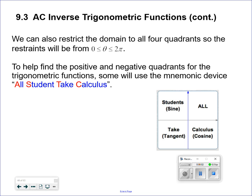Welcome back again. We're going to expand on what we did on 9.3 AC. We're changing our restrictions in our domain. So instead of only allowing things in the first and fourth quadrant for sine, we're now allowing it anywhere in any quadrant.